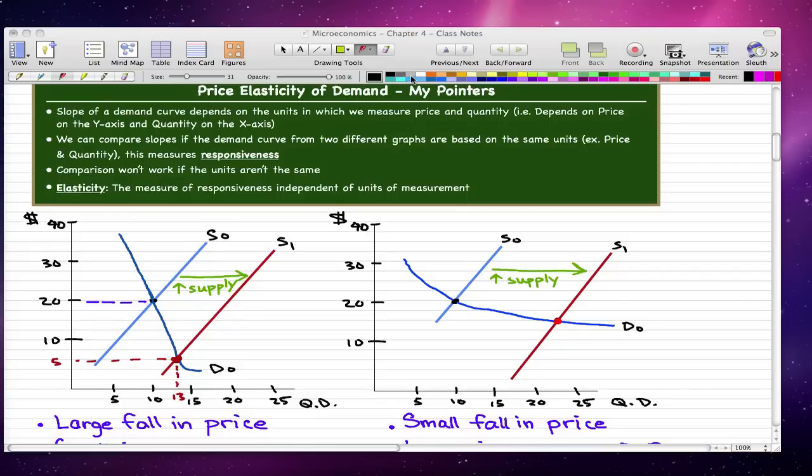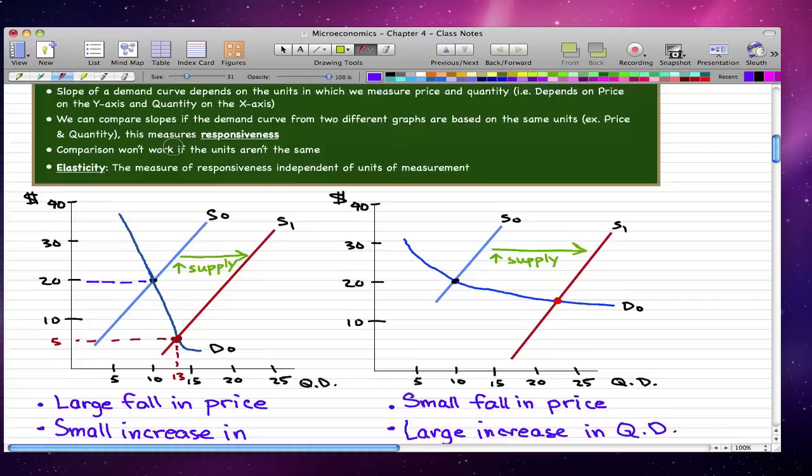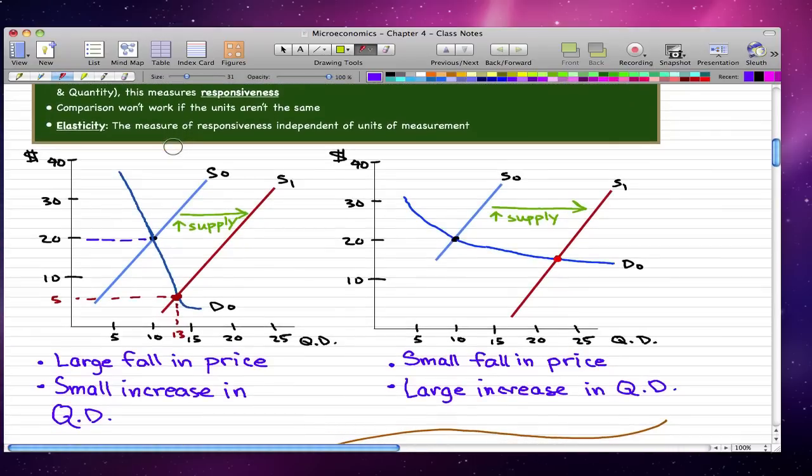Let's talk about these graphs and what they mean. In this first graph, we can see this is our original supply and this is the supply curve after we have an increase in supply, and this is our original demand curve. At the original intersection between supply and demand, the price of the product was $20 and the quantity demanded was 10. Due to the increase in supply, we have a large fall in price and there's a small increase in quantity demanded.